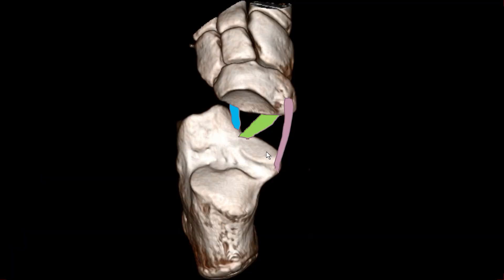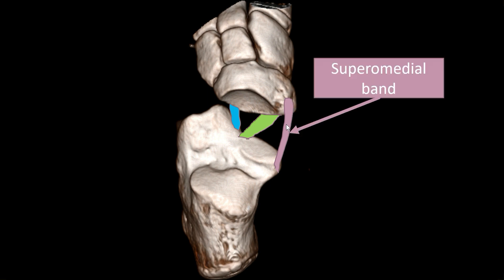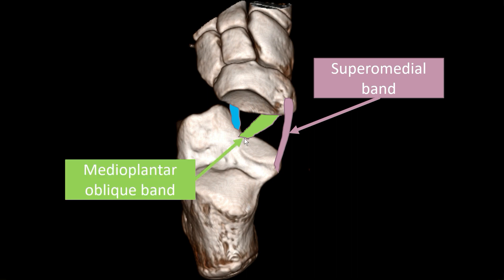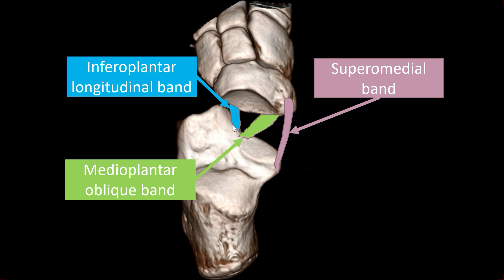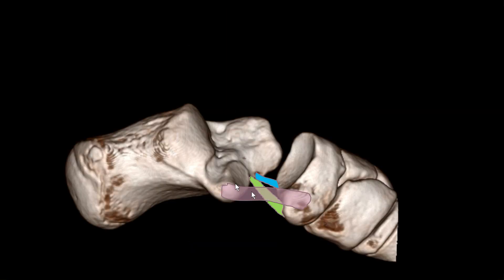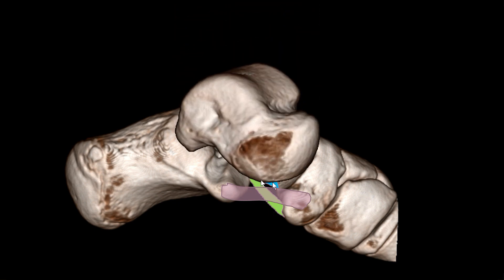This is just another view of the spring ligament complex components. We have the supramedial band, running from the sustentaculum to the supramedial portion of the navicular bone — the most important and strongest one, which you should assess in every ankle MRI. Here you can also see why the medial plantar oblique band is named so — it runs obliquely and attaches medially onto the navicular bone on the plantar aspect. The inferoplantar longitudinal band runs longitudinally and attaches on the inferior plantar aspect onto the navicular beak. This is another view of the hammock where the talus sits comfortably.